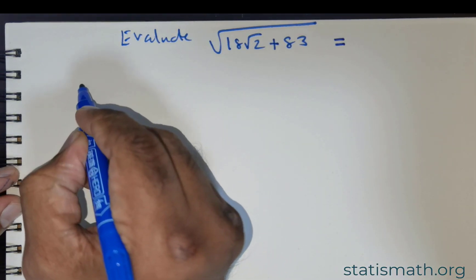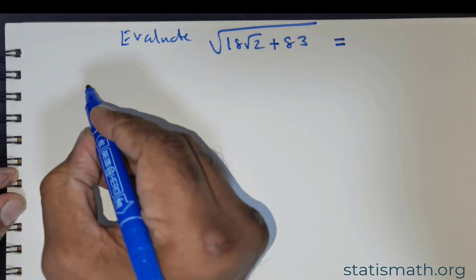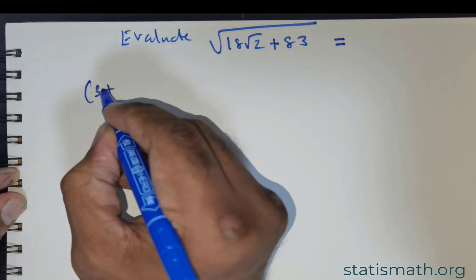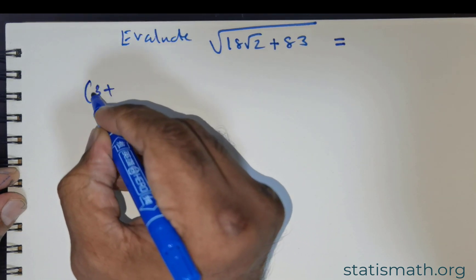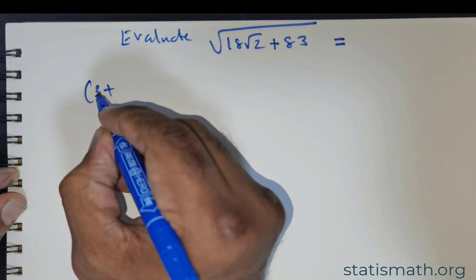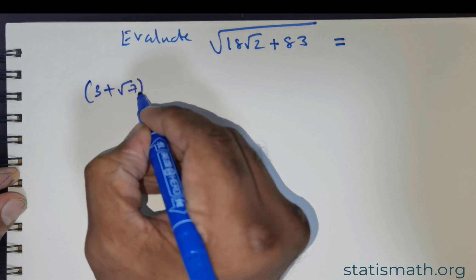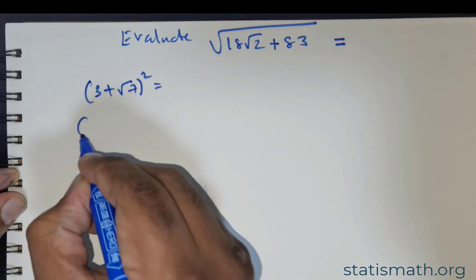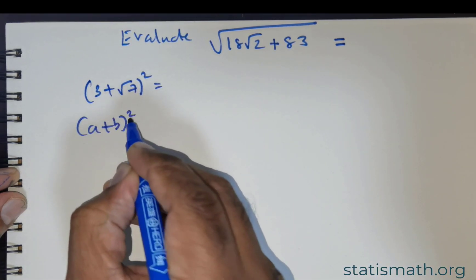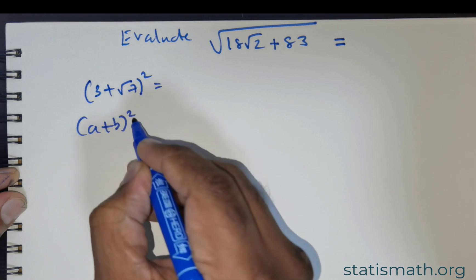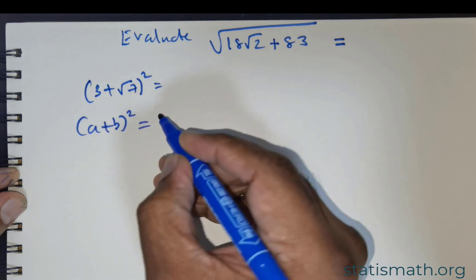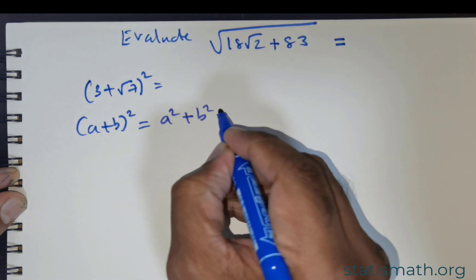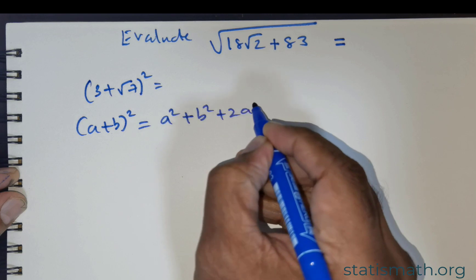Let me give you an illustration. Imagine you are asked to find the square of (3 + √7) raised to the power of 2. What would you do? You will instantaneously apply the (A + B)² formula, which is A² + B² + 2AB.